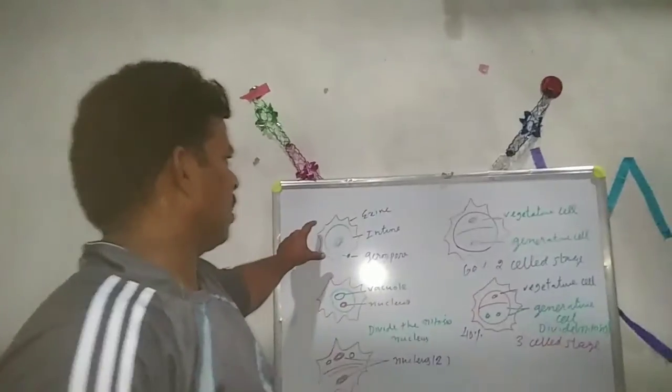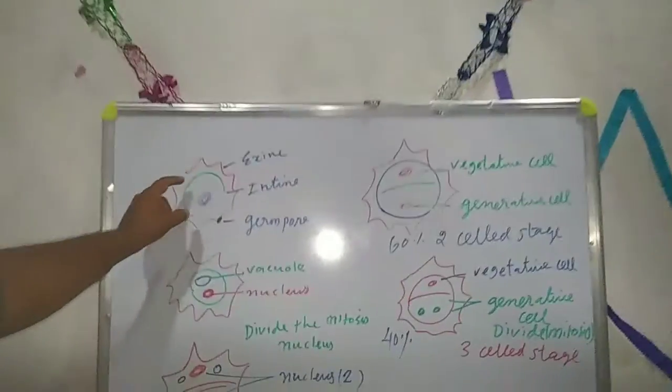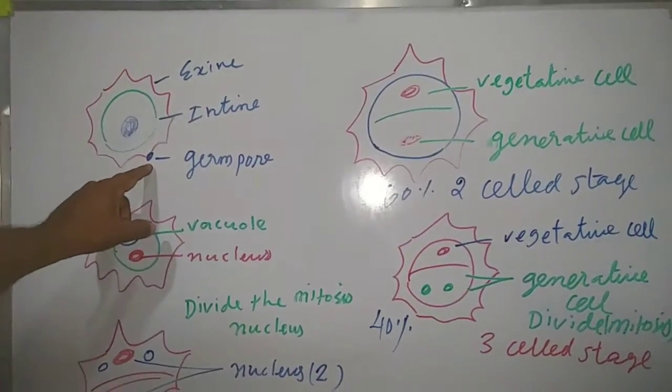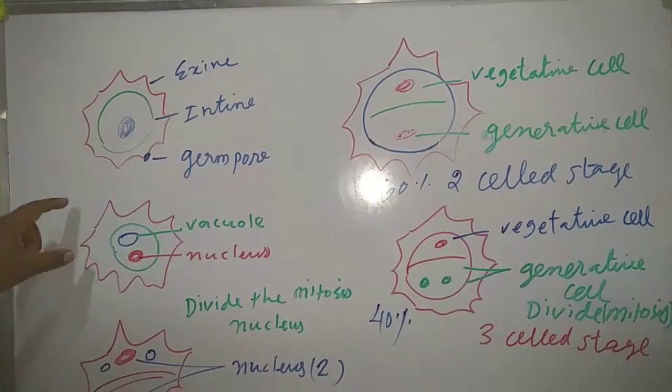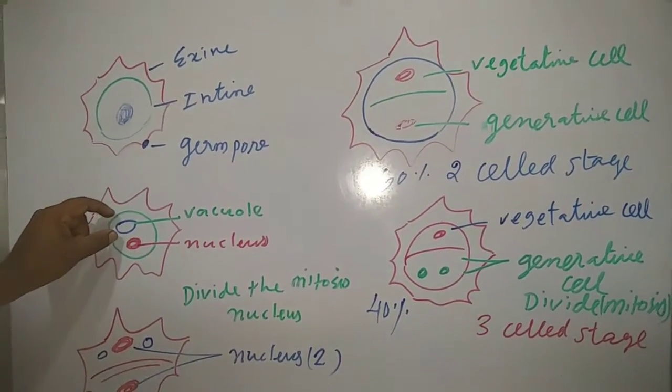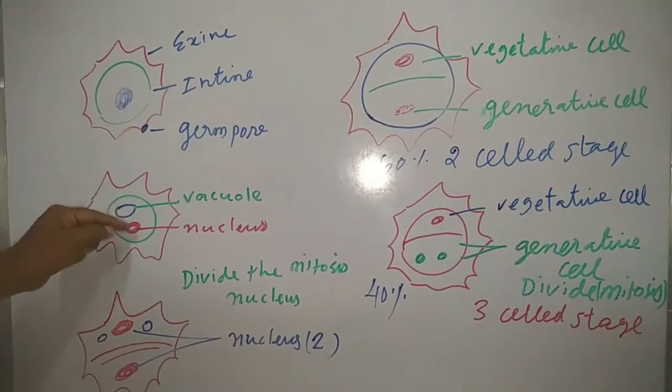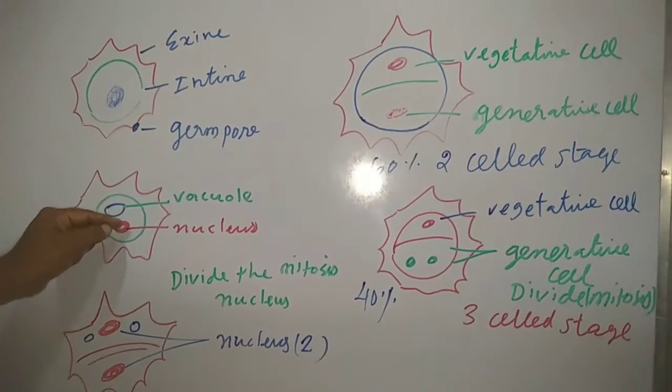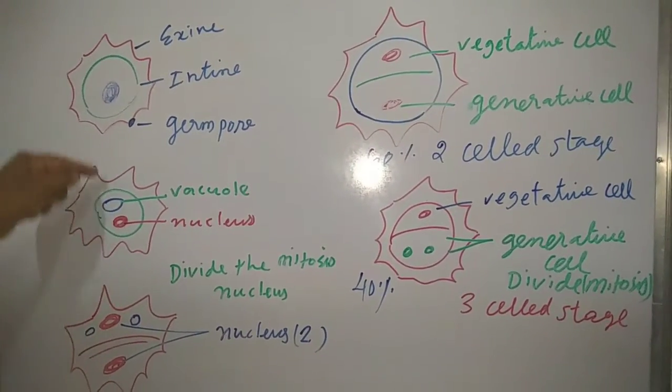The pollen grain, the microspore, has exine and intine. They have a small pore, it is a germ pore. Next they have large vacuoles that are used for nucleus division. The nucleus also gets nutrients from the vacuoles at this stage.